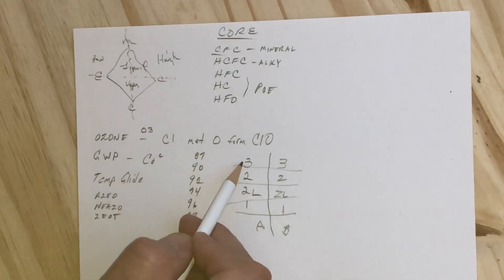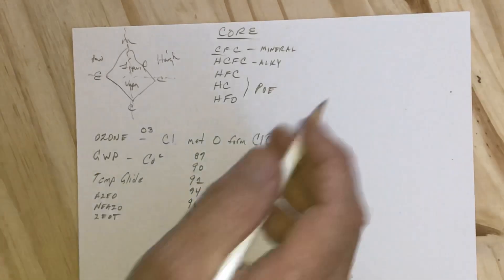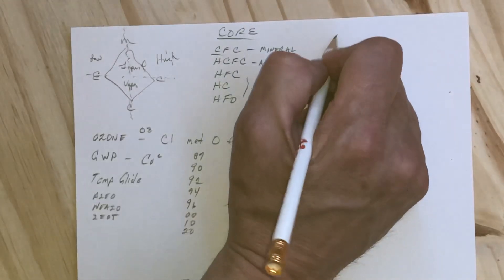If you have a B1 refrigerant like 123, that's not flammable at all but has some toxicity, all the way up to the hydrocarbon R-600 refrigerant, which is not very toxic but highly flammable. Then you have some newer ones like 1234yf that are 2L - they have slight flammability but are not toxic.